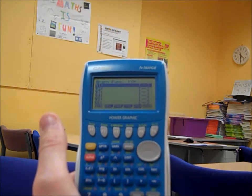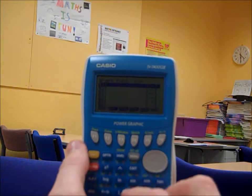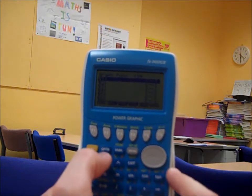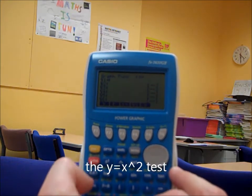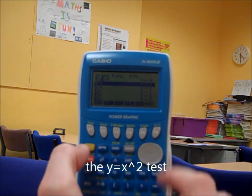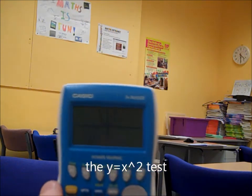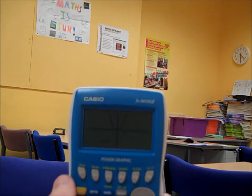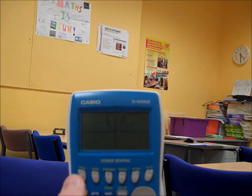Of course, we can do any kind of graphing on here. So in the graph menu, let's do y equals x squared, the classic, to start off with. And there it is. Nice green. Very, very similar to the 9750G2 and all that kind of thing.